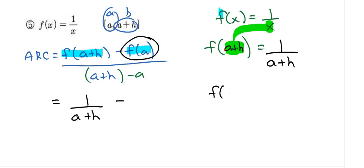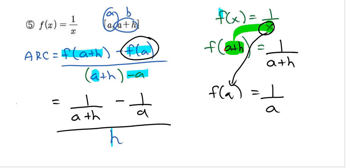So this is 1 over a plus h minus now what is f of a. f of a is simply, well anytime you see an x you replace that with a, so that will become 1 over a, all divided by—on the denominator here this a and this negative a, those terms will cancel off and now you're just left with a single h.